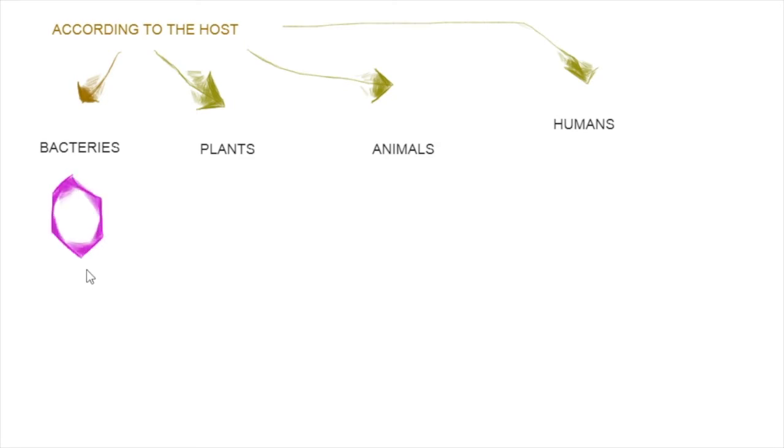Finally, according to the host, we can group them depending on what kind of things they can infect: either bacteria, plants, animals, or humans. These ones, the complex ones, can only infect bacteria, while the ones that look like a cylinder and have no cover only infect plants. Other viruses like the flu, that look like one of these, only infect animals or humans.